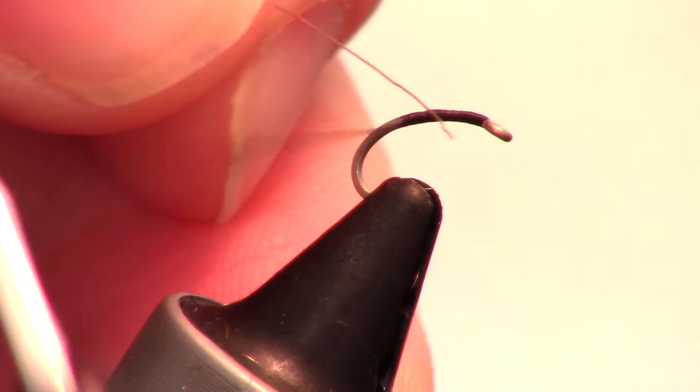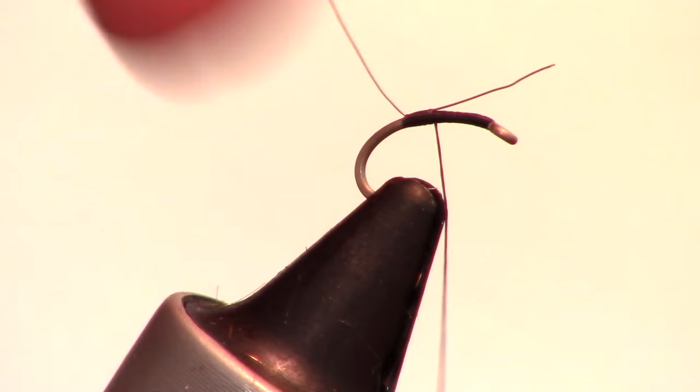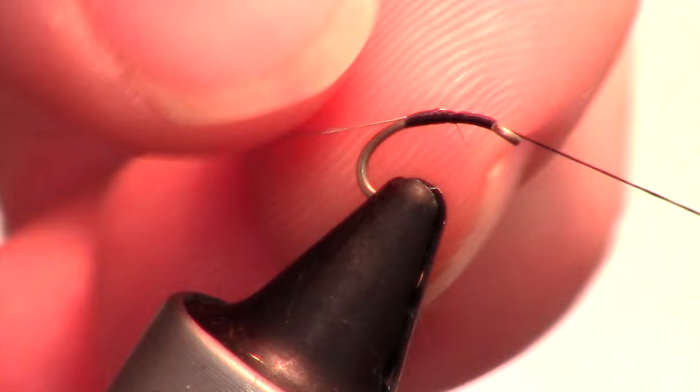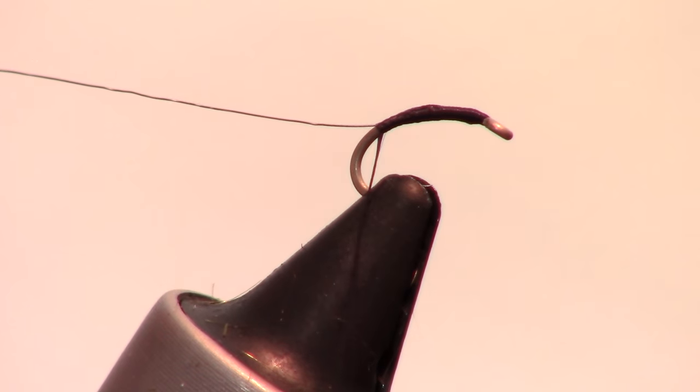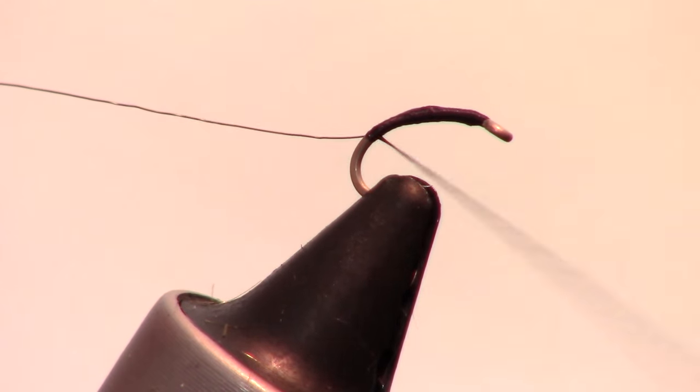Now we will attach an extra small wire and cover the tag end of the wire completely. Then wrap all the way down the hook shank as far as you feel comfortable.